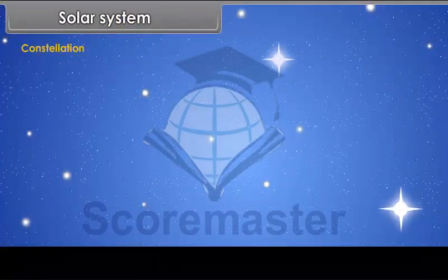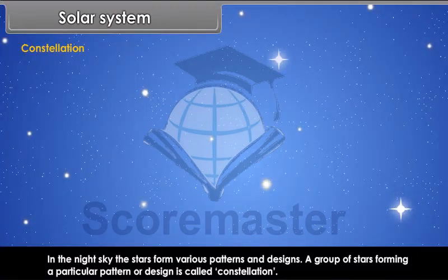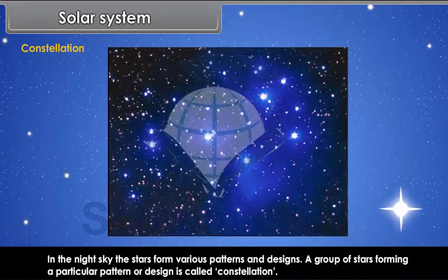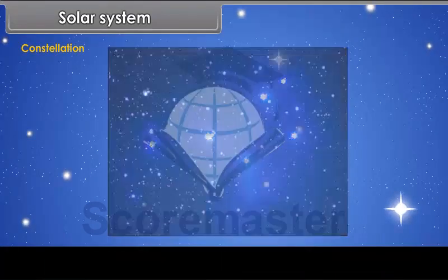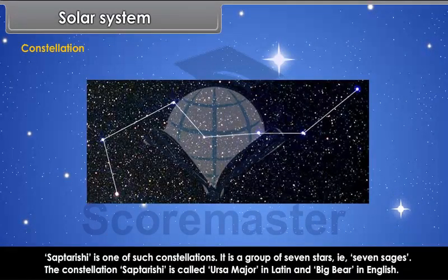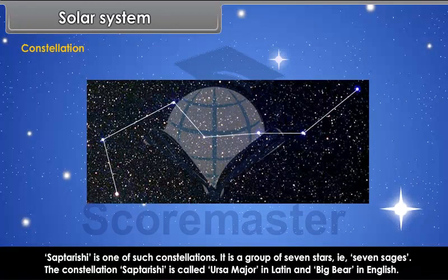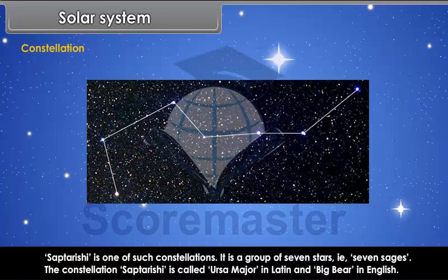Constellation. In the night sky, the stars form various patterns and designs. A group of stars forming a particular pattern or design is called Constellation. Saptarashi is one of such constellations. It is a group of seven stars, that is, seven sages. The constellation Saptarashi is called Ursa Major in Latin and Big Bear in English.